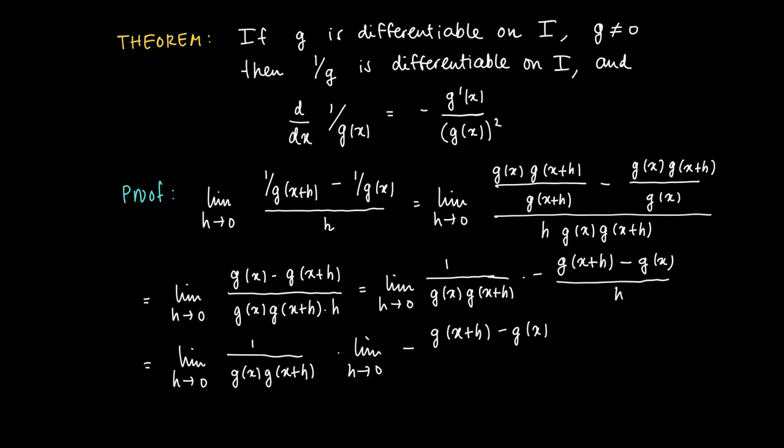So the limit of the first term, the limit of h to 0 of 1 over g(x)g(x+h) equals 1 over g(x) squared since a differentiable function is continuous. And on the right hand side, the limit on the right hand side is minus the derivative of g at x.